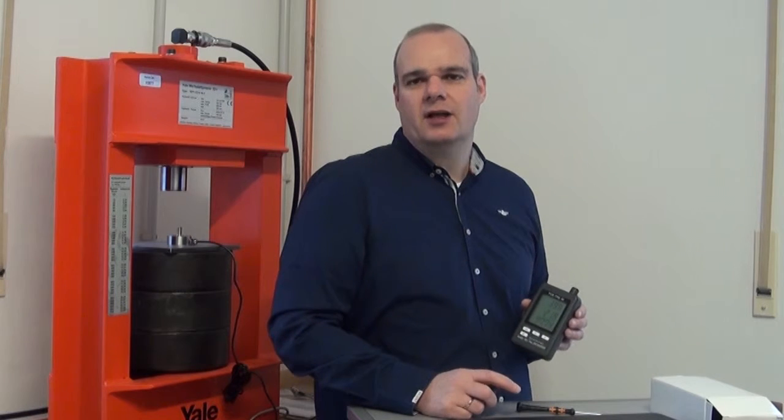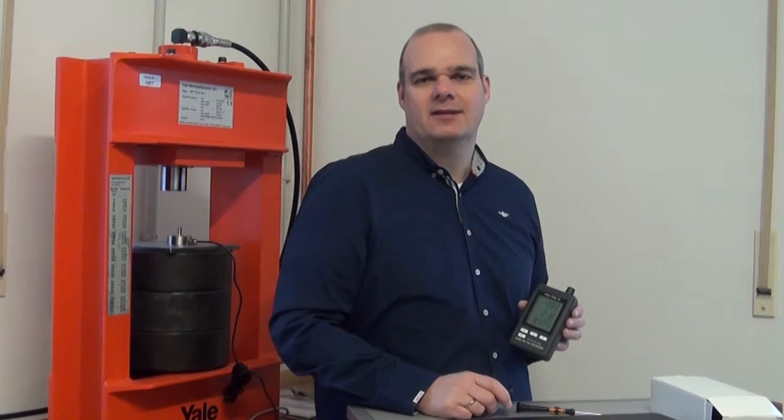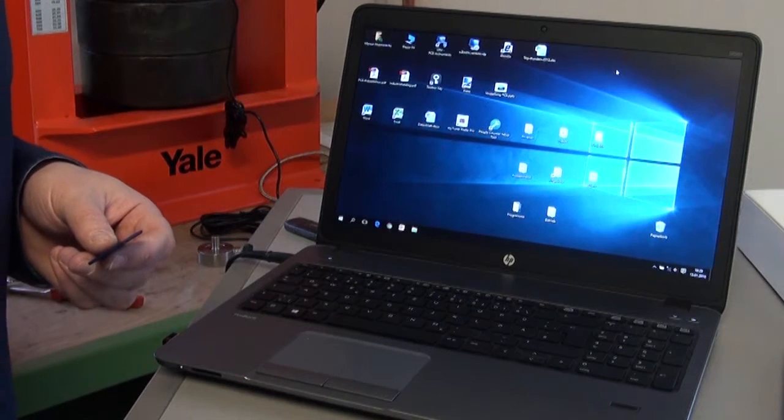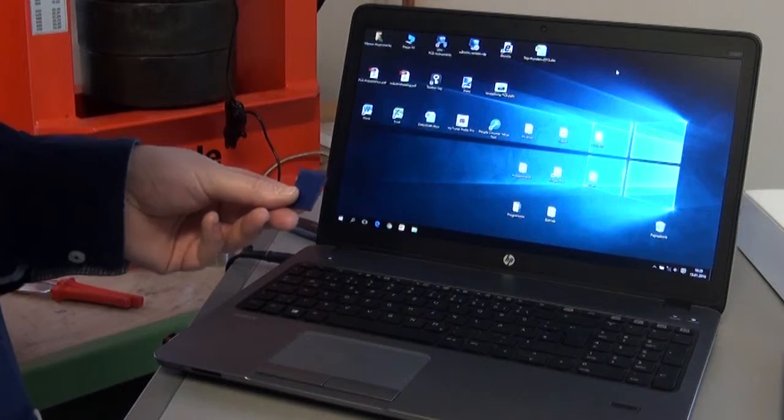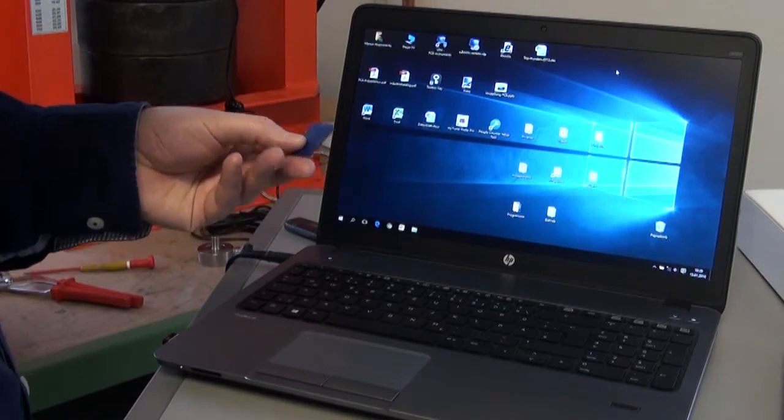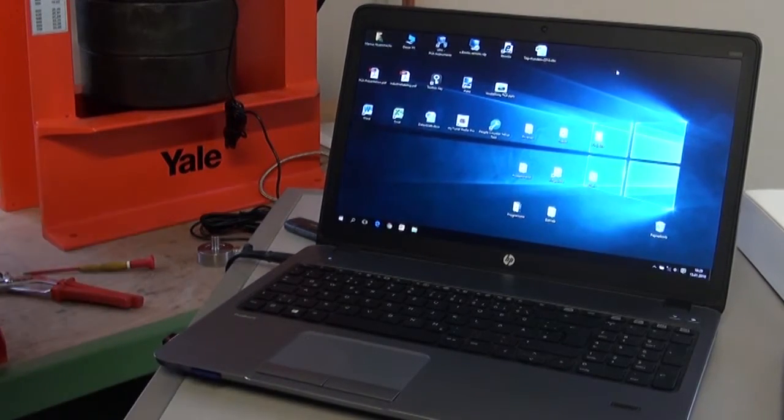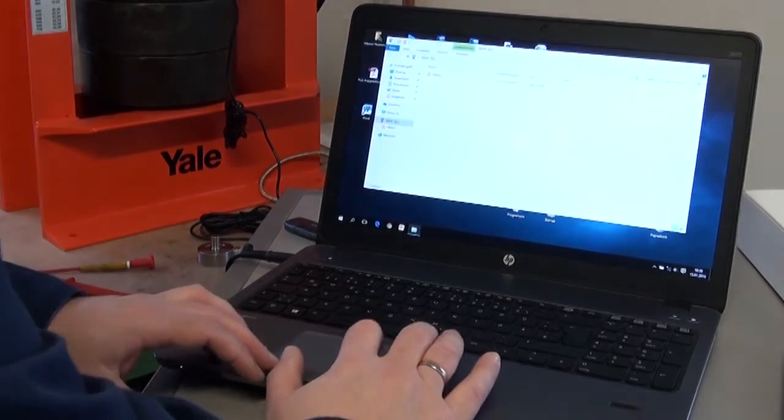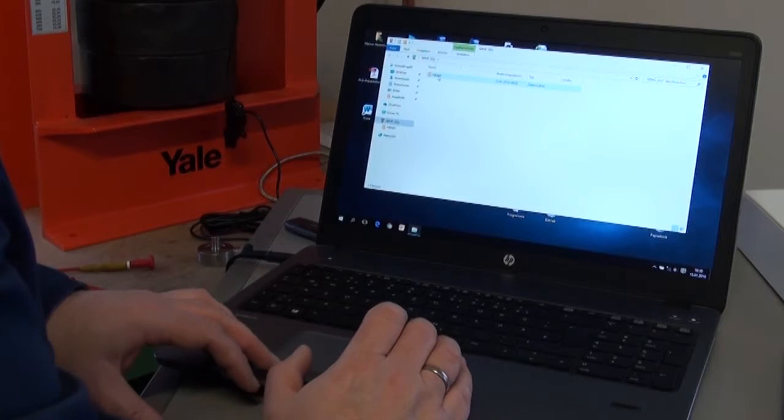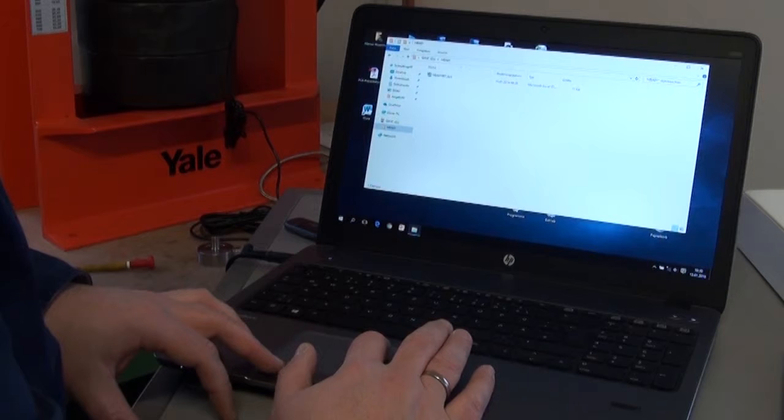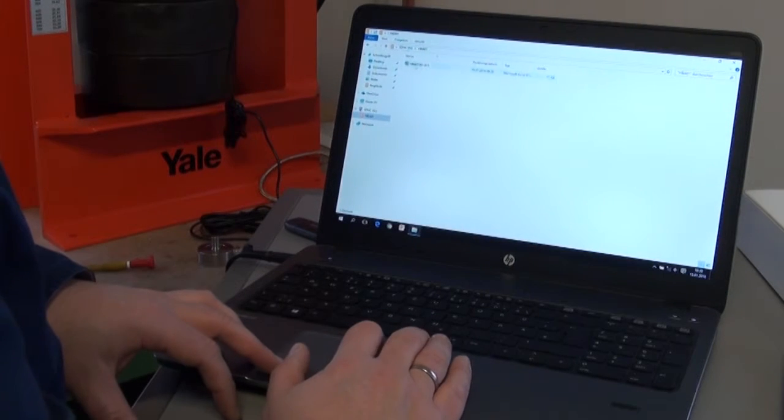I'd like to show you now what the Excel file looks like. For this I will make my computer ready and we can have a look. So I have taken the SD card out of the device. I have luckily an SD slot on my computer. It is recognized directly. I open the file and then open the XLS file.